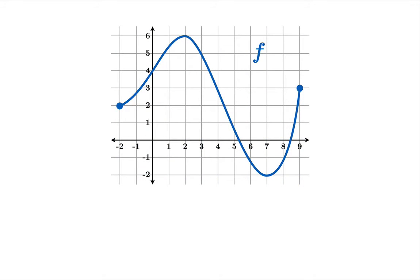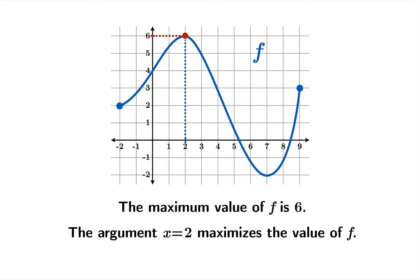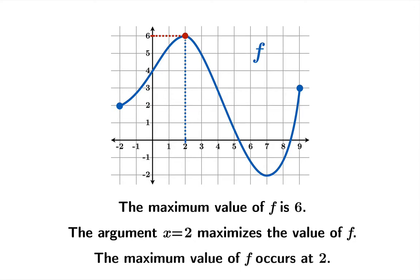We'll start by looking at the language for this simple example. Here's the graph of a function f, and we might say that the maximum value of f is 6 — it's the greatest value this function can attain. We might also say that the argument 2 maximizes the value of f; in other words, 2 is the number you plug into the function to get the maximum value, or the maximum value of f occurs at 2. Make sure you are tuned into the distinction between finding an argument that maximizes the function versus talking about the maximum value itself.